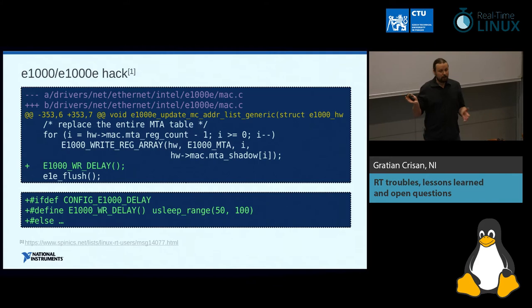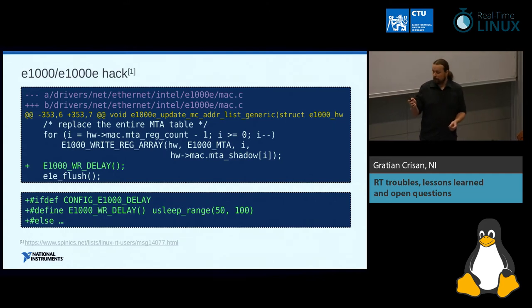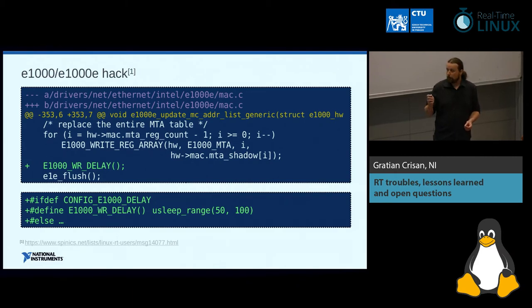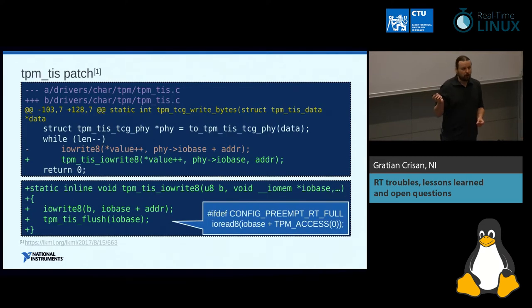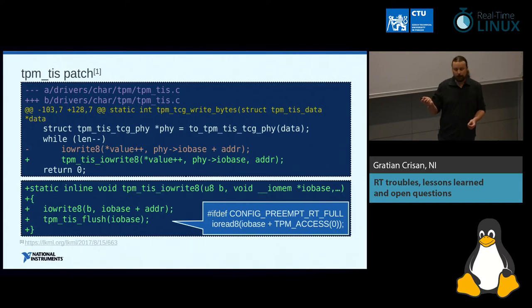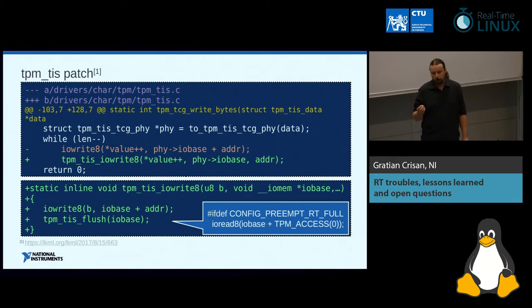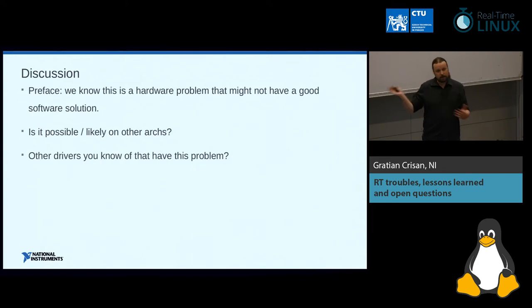We have two ugly hacks currently. For the Ethernet driver, we added a delay after stretches with a large amount of register writes. For the TPM chip, my colleague Harris Okanovic did a more involved patch that replaces the IO write call with an inline function that, for PREEMPT_RT, does a read after each write to force the flush, so you only get a single access delay in the pipeline.